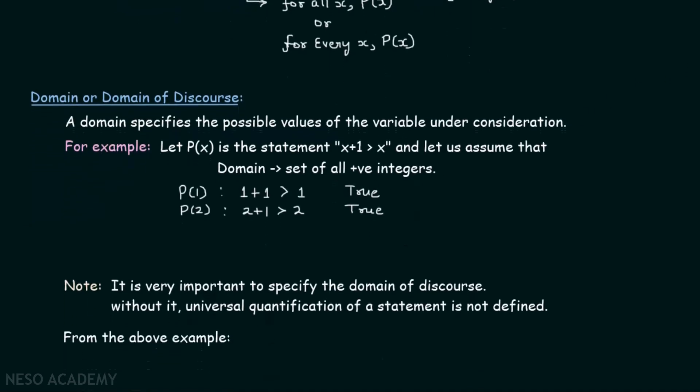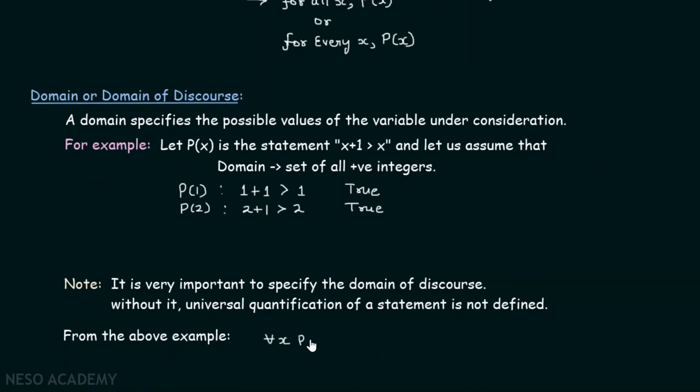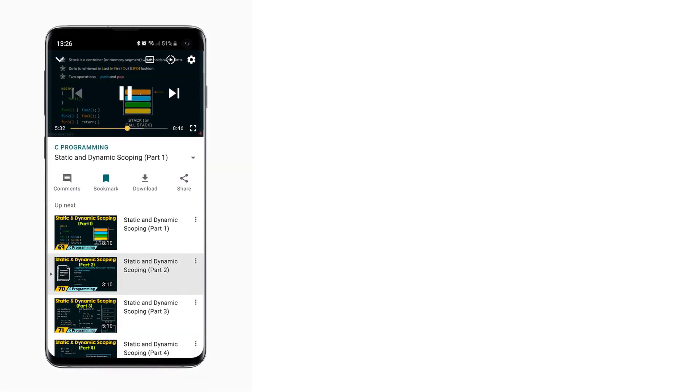Apart from this, from the above example, we can say that for all x P(x) is true under the domain of positive integers. We will consider the different values of x as positive integers only. This should be well noted because our domain is set of all positive integers. Thank you.